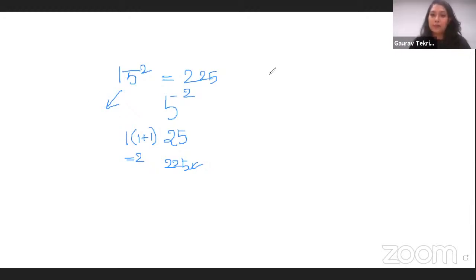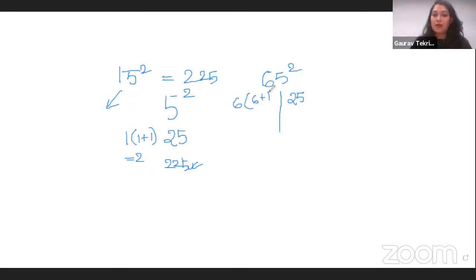Let's take a bigger number this time. Let's take 65. In the same way, we do 25 which is 5 squared, and here we do 6 into 6 plus 1 which is 7, so it is 6 into 7 which is 42. So 65 squared is 4225.